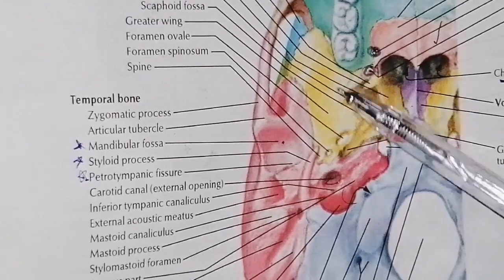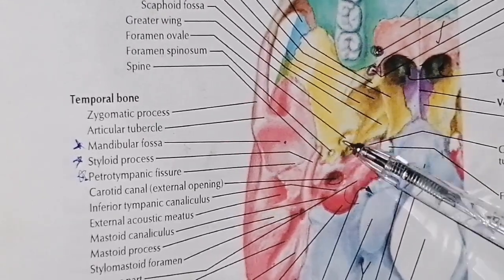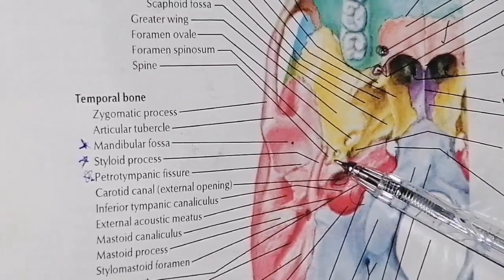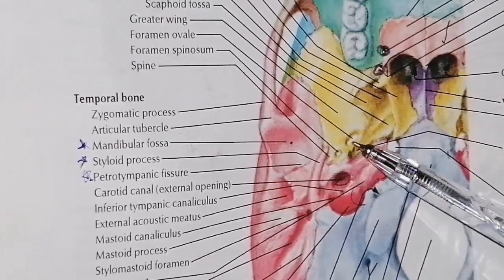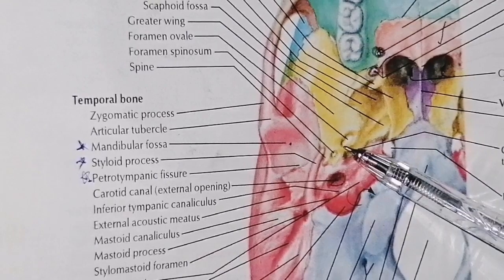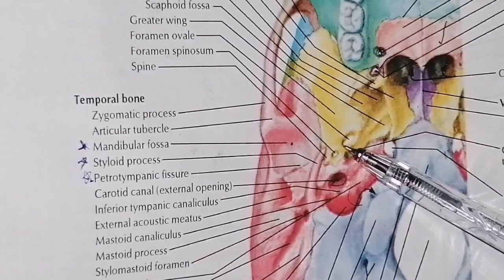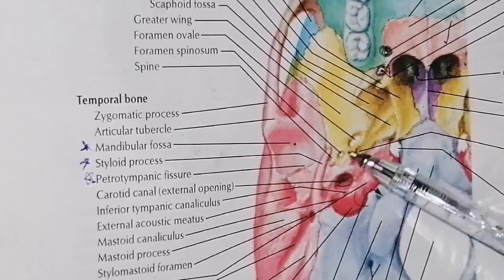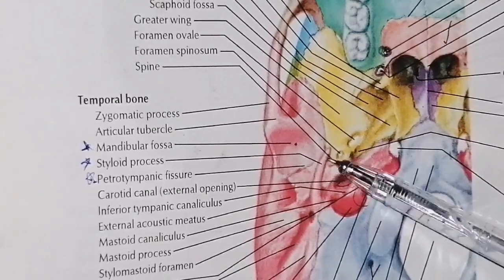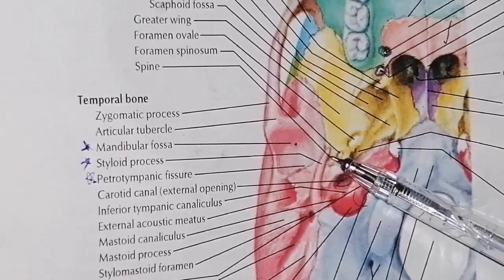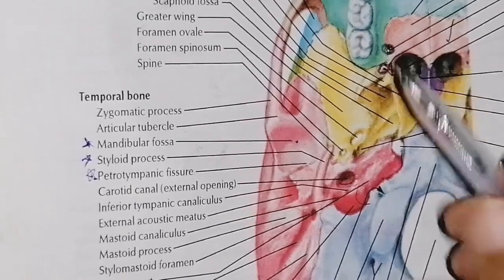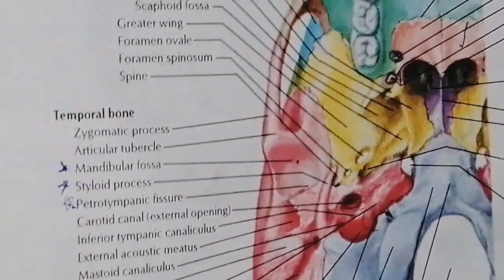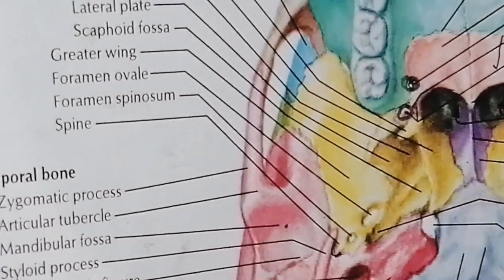Posteriorly we have the sphenoid greater wing. In this region, we see two foramina present — a greater foramen and a lesser foramen. The greater foramen is called foramen ovale and the smaller one is called foramen spinosum. This is the sphenoid's end, which is called the spine of the sphenoid bone.